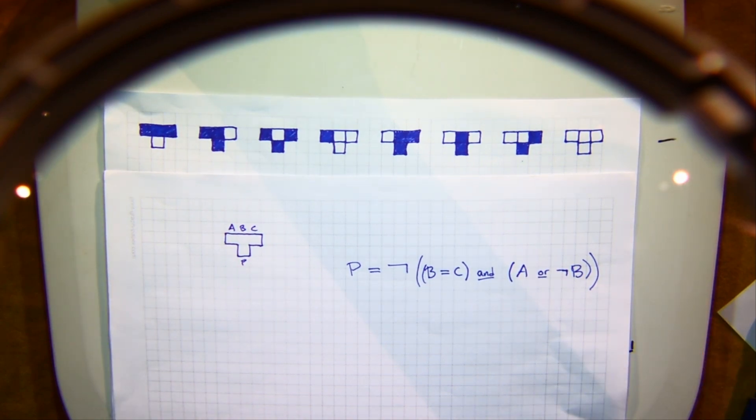And the answer is, it's actually a fairly simple logical rule. All you need is to be able to do not, and, and, or, and check for equality, and then you get this rule. It's not that hard.